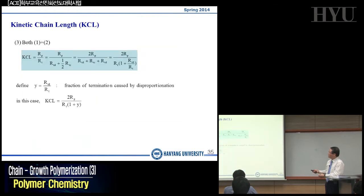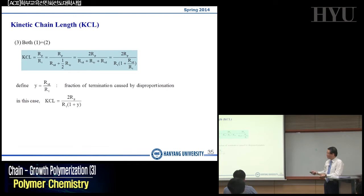If I combine this together, the kinetic chain length would be defined as RP divided by RT, in the bracket with 1 plus Y, where Y is defined as the fraction of disproportionation. So if Y is equal to 0, it means you have total termination done by coupling.